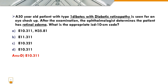The first code is E10.321, that is option C. The second code is H35.81 — a separate retinal code. We have to use a separate retinal code because E10.321 is for type 1 diabetes mellitus with unspecified diabetic retinopathy with macular edema. This is included under the first guideline for diabetes mellitus: combination codes. The combination code captures the type of diabetes and the complication together.